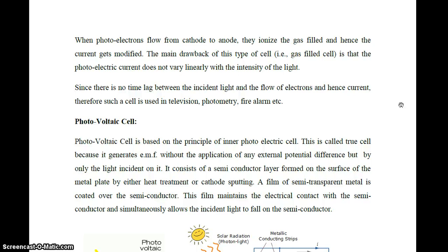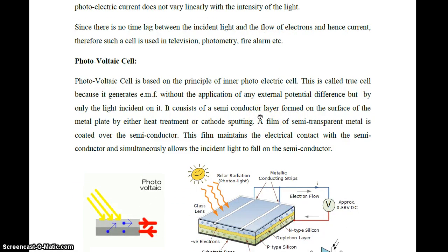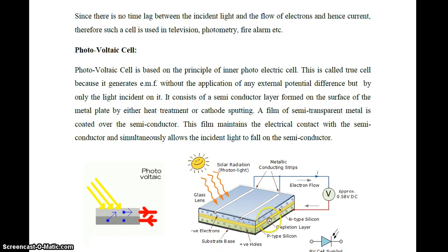The second type is the photovoltaic cell, also called a solar cell. Solar radiation is incident on a glass lens or conductive metal strip. An EMF is generated without any external potential difference. It consists of a semiconductor layer with P-type and N-type silicon material, with a depletion layer created between them.